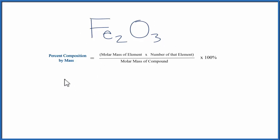So let's do Fe first. We have Fe, and to find that percent composition by mass, we have the molar mass of the element. So we need to go to the periodic table. When we look up iron, it's 55.85 grams per mole.